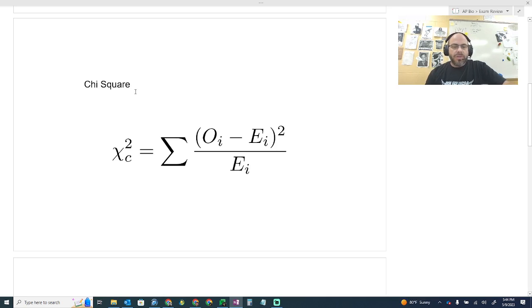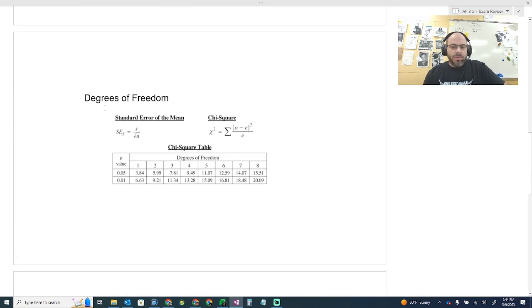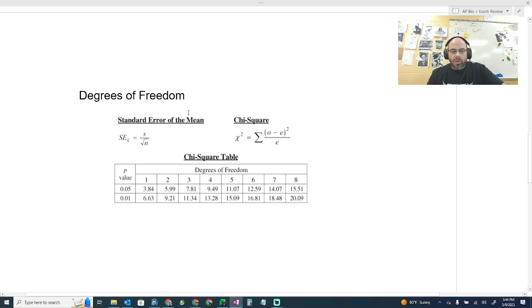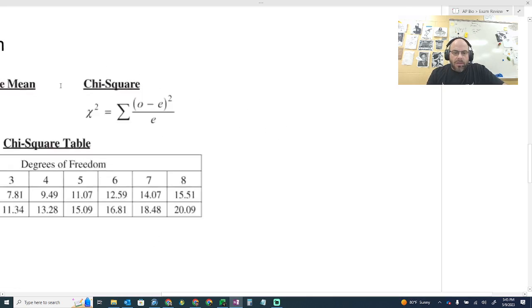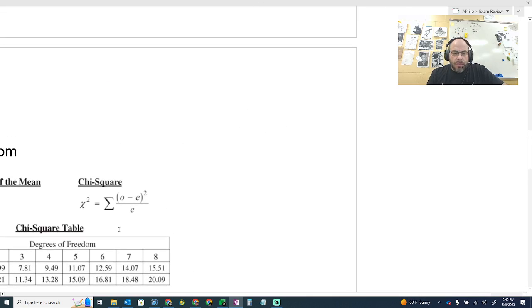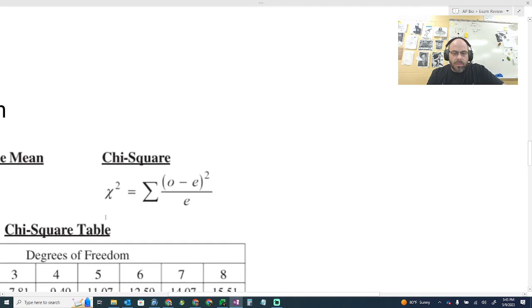Here's the chi-square equation. Here's another version of that equation. This is actually pulled directly off your formula sheet. So ignore standard error of mean. I just didn't want to mess with it. I just selected my screen and put it right off the formula sheet because this is what you're going to be looking at.